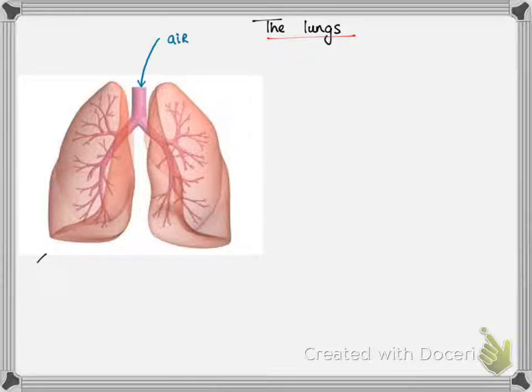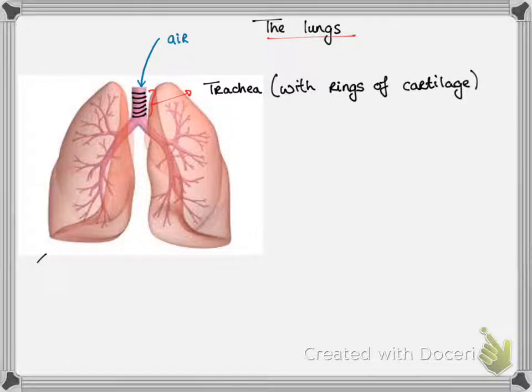So air enters through an upside-down tree, which would be the trunk. This trunk is known as the trachea, so it's a tube and it is supported by rings of cartilage. This stops it from collapsing during breathing or ventilation.